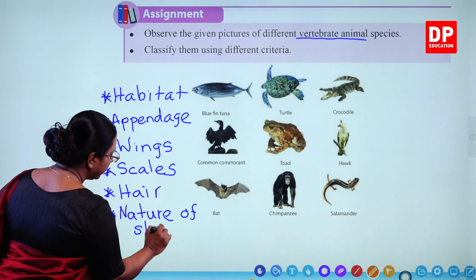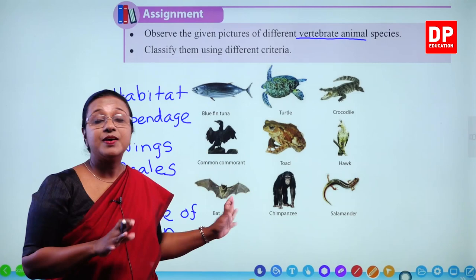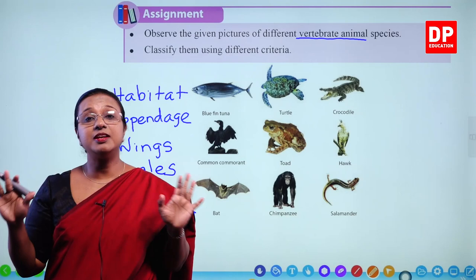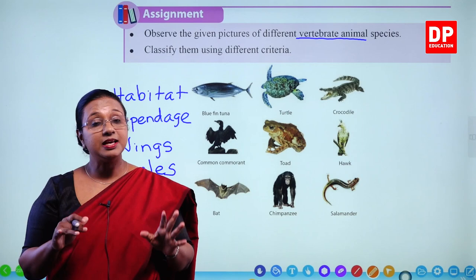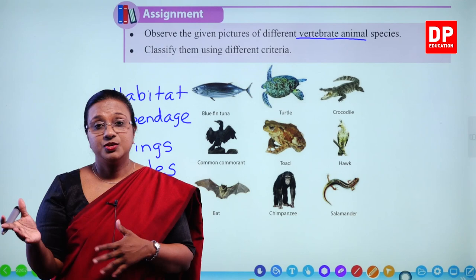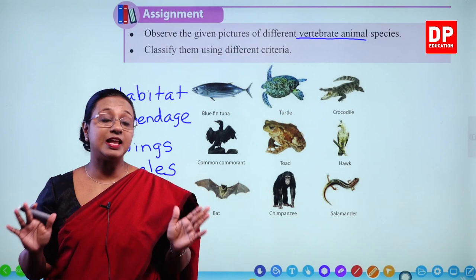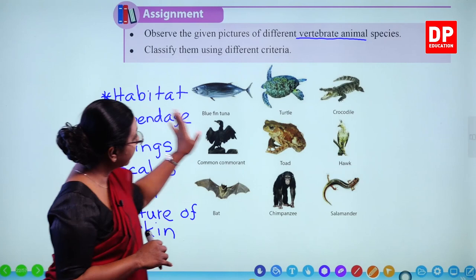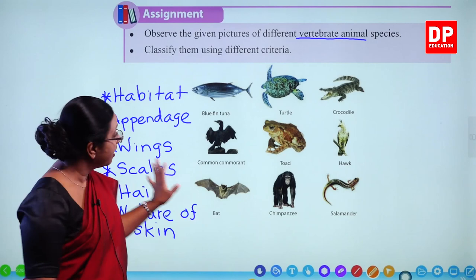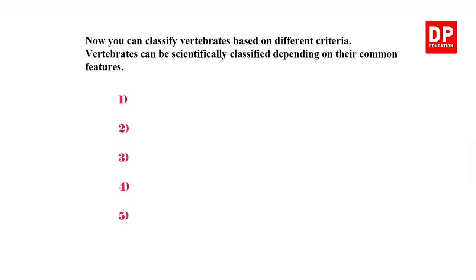All those are different properties and characteristics you can easily identify — even the presence of scales or hair. All these come under the nature of skin. Like this, we can use many different features. If I ask the whole class to classify these organisms based on different criteria, each one will have a different classification. That is also useful, but it is not the standard classification. That is why we use a systematic scientific method of classifying organisms.